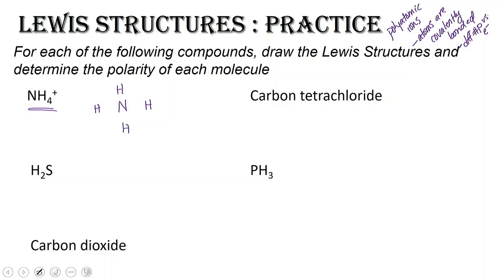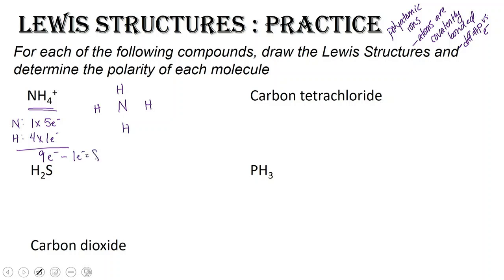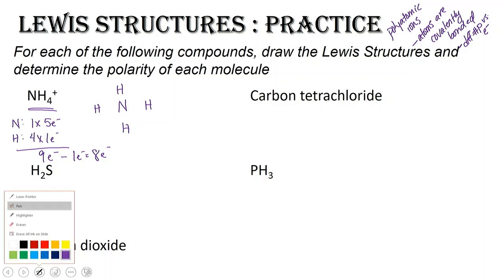We've got to determine the number of electrons. For nitrogen, I've got one times five electrons. For hydrogen, I've got four times one electron. And because it is a positively charged ion, once I add these together I've got nine electrons, but I've got to subtract one because it's a positive charge. So I have eight total electrons to place.